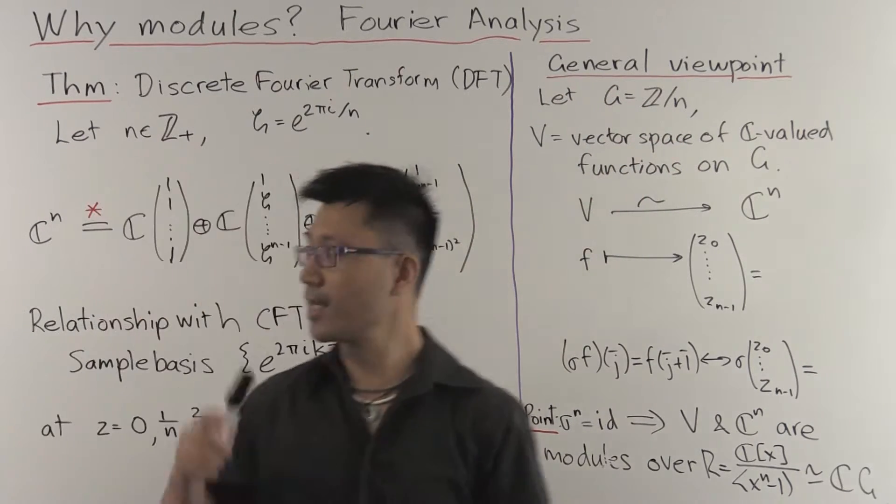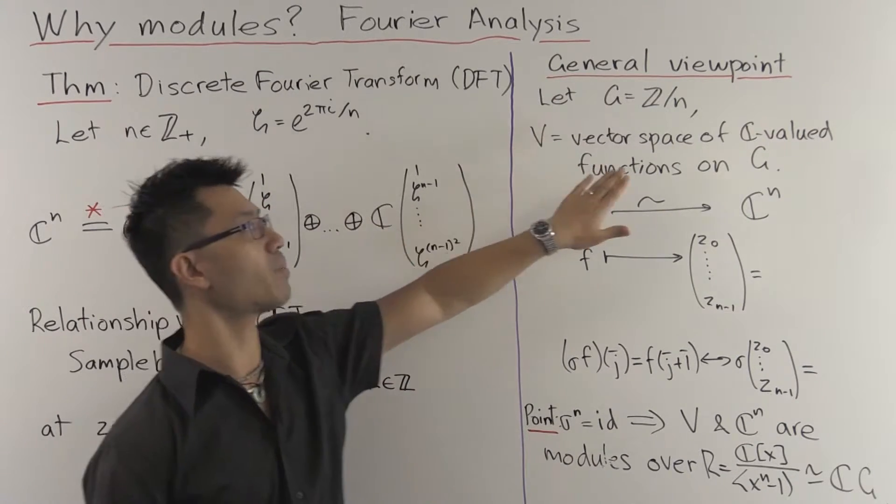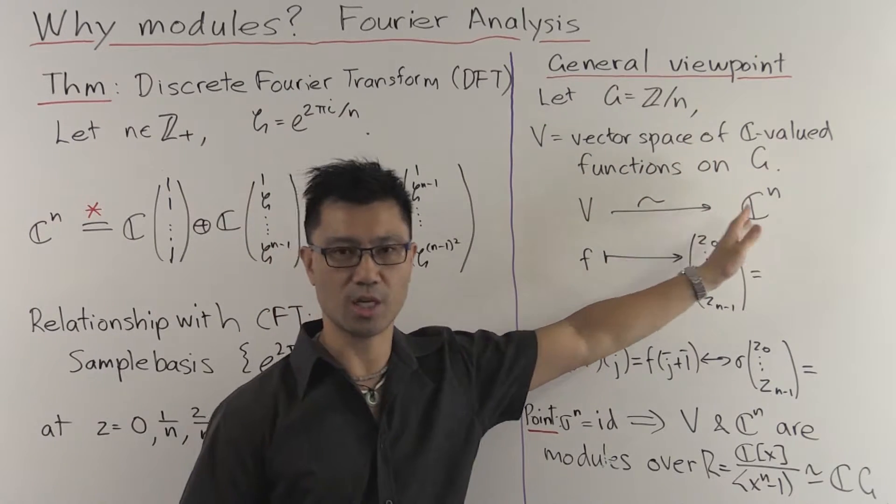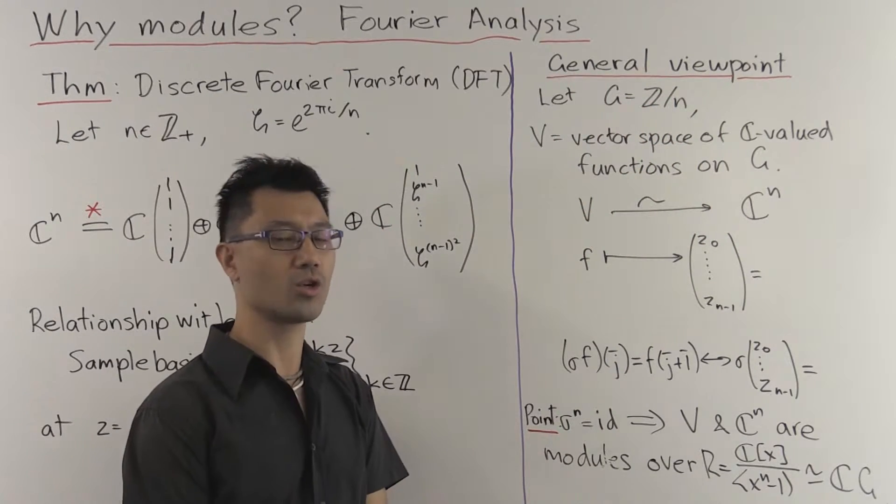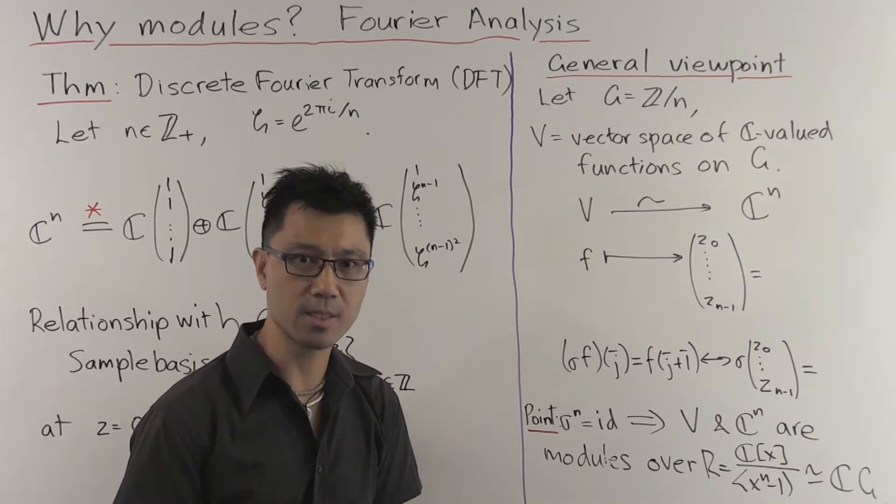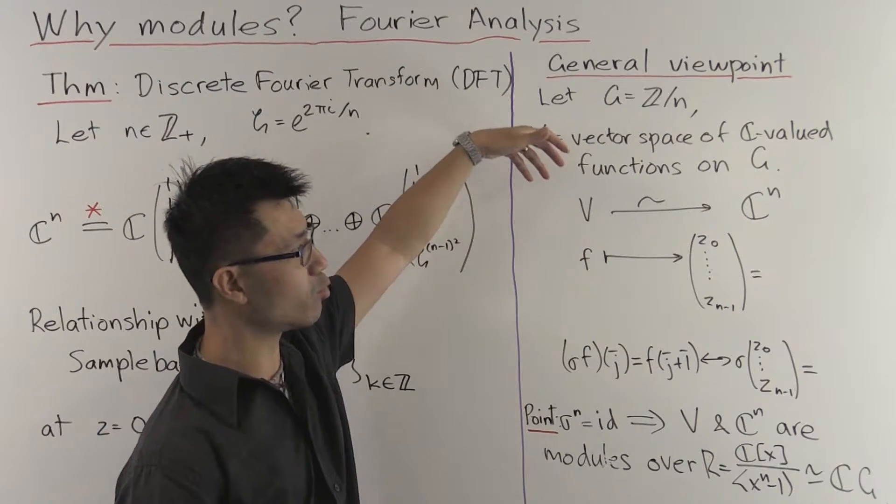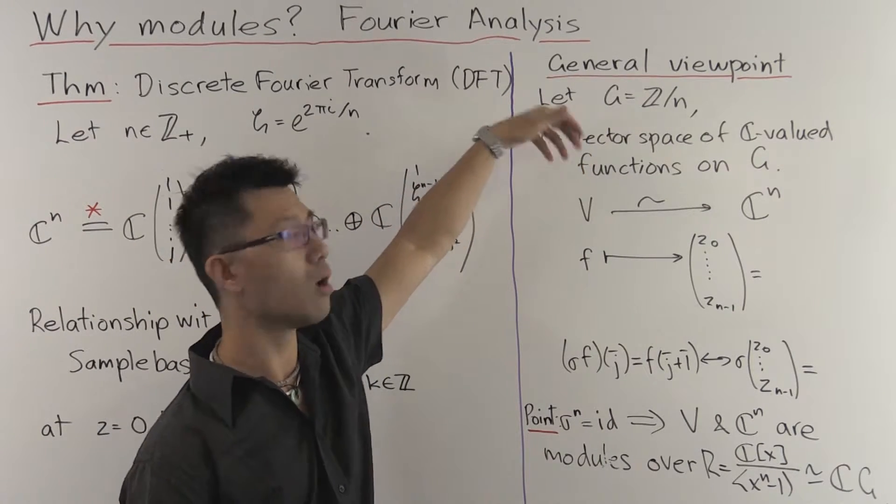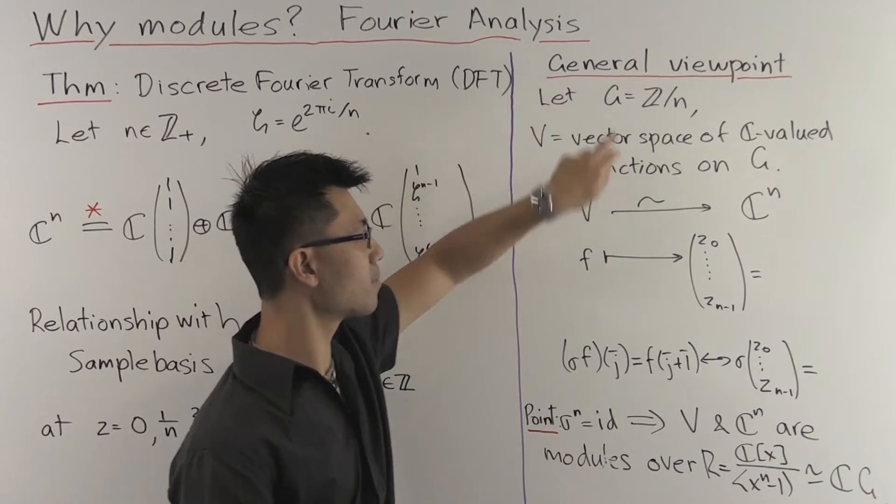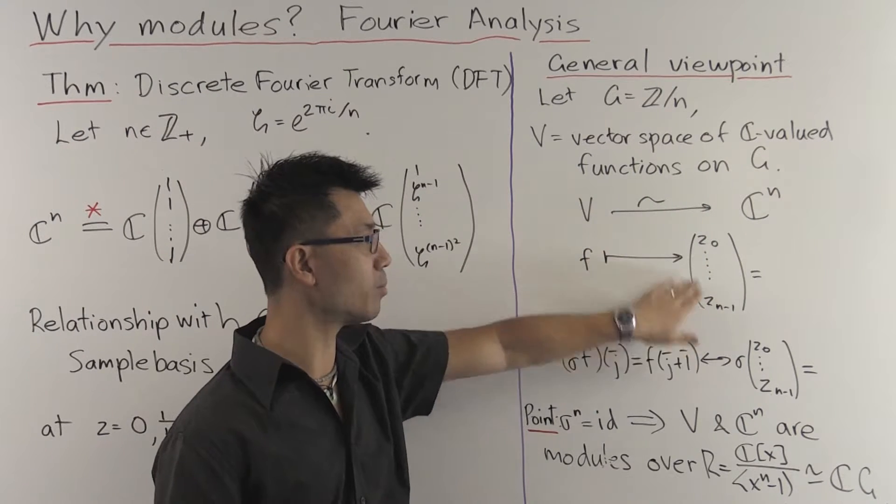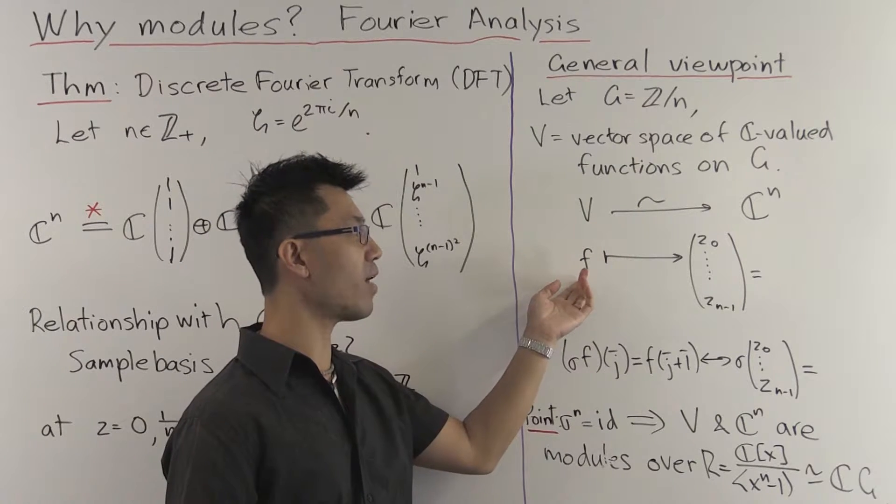And then we're going to view this C^n in a different way. We're going to consider V to be the vector space of complex-valued functions on G. So G has n elements in it, so you're just looking at functions on an n-element set. So that's basically just C^n. And to make that explicit, we can write down an isomorphism from V to C^n. If you have a function on G, you can map it to the following n-tuple, z₀ down to z_(n-1). How do you do that? You just list all the values of f.